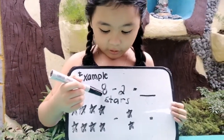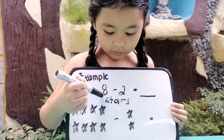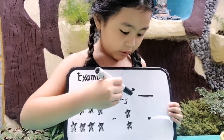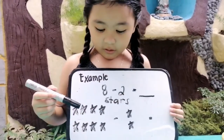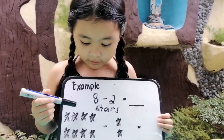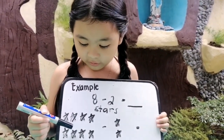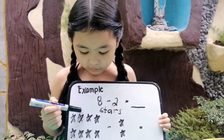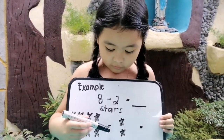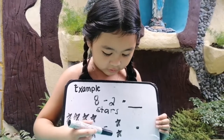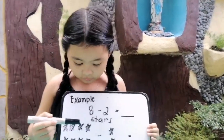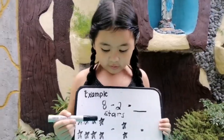Example: 8 stars minus 2 stars equals. Ang gagawin mo ay mag-drawing ng 8 stars, then i-cross out ang 2 stars.